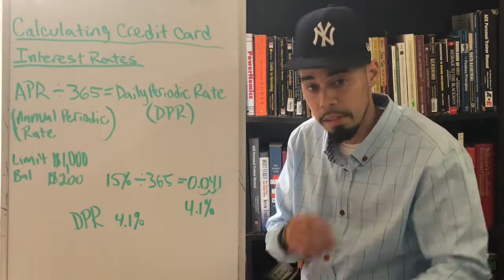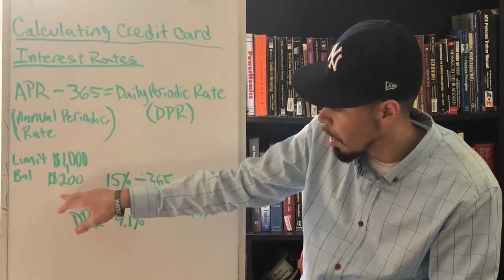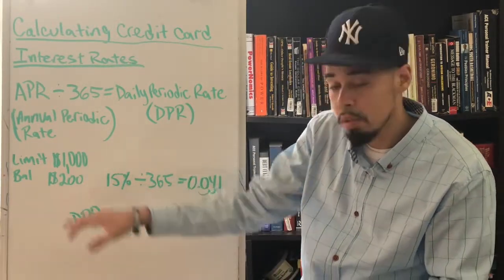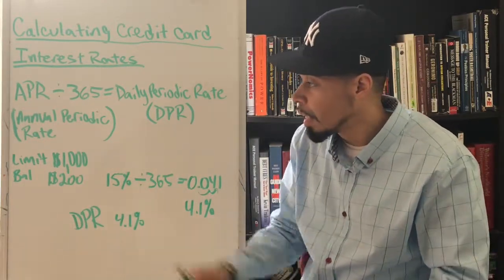Now if you guys want to figure out how much is 4.1 percent of 200, calculate it, do it yourself. That's how you find out - I just gave you the formula. That's how you'll find out exactly what 4.1 percent of $200 is, so you know daily what you're paying on that money.